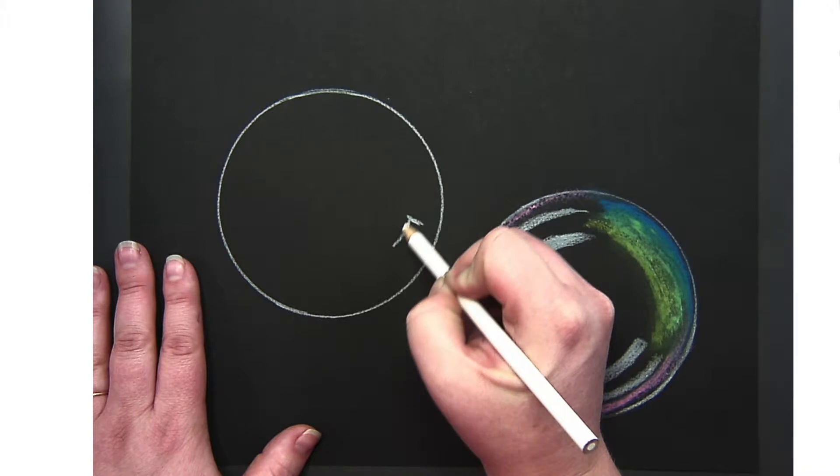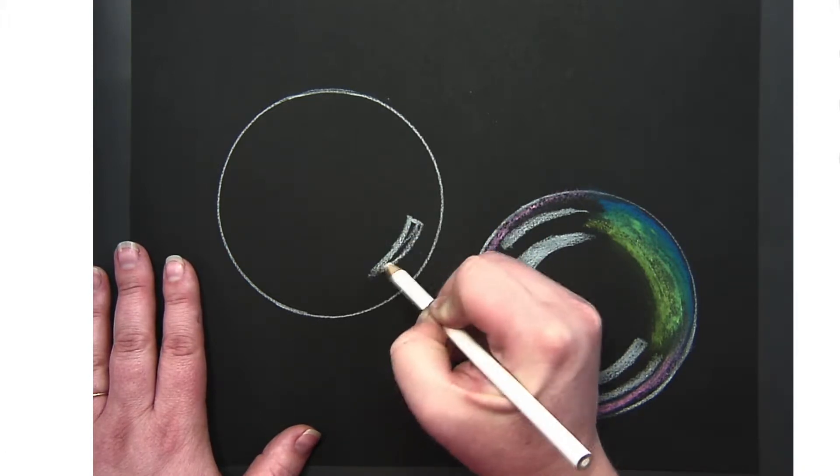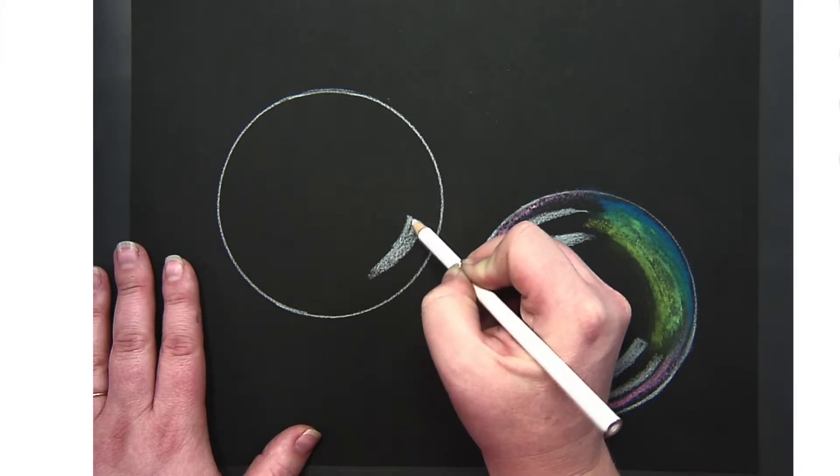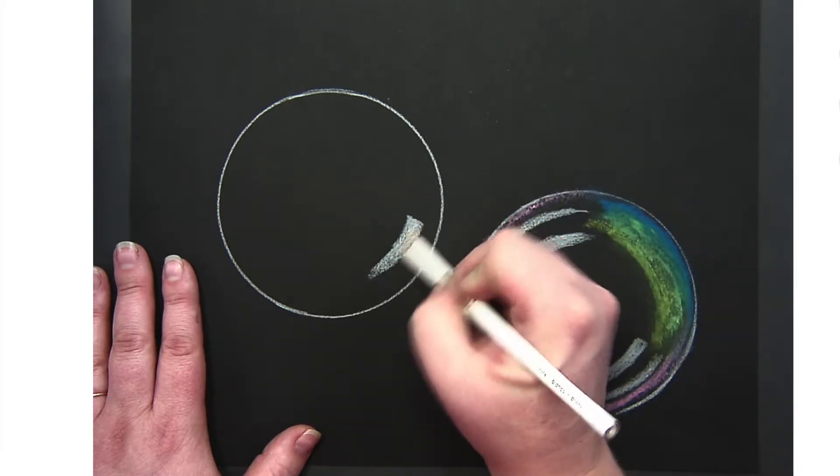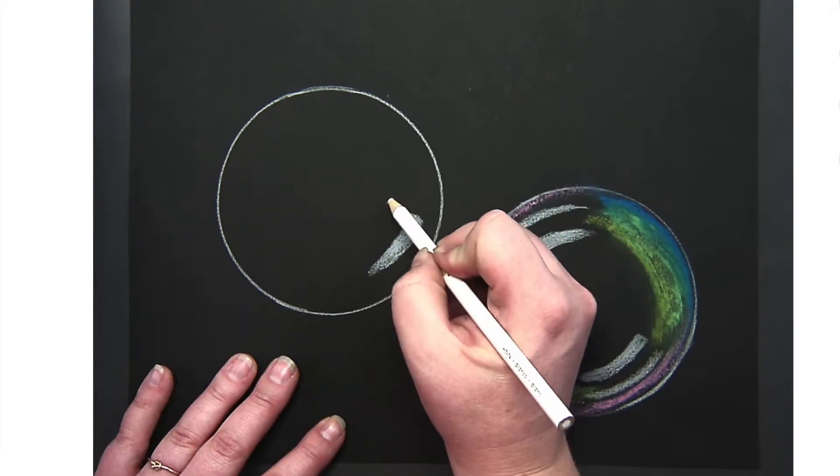Next I'm going to add in reflections using that same white colored pencil. These reflections will usually be similar shapes to the lightest objects around the environment where you are creating your bubbles.